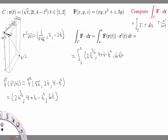Dot with (1/(2√t), 2, -2t), all with respect to t.